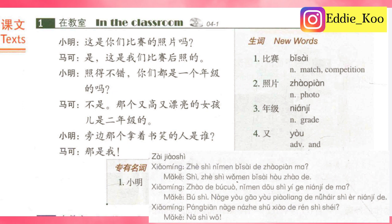Second time reading. 这是你们比赛的照片吗？是。这是我们比赛后照的。照得不错。你们都是一个年级的吗？不是。那个又高又漂亮的女孩是二年级的。旁边那个拿着书笑的人是谁？那是我。